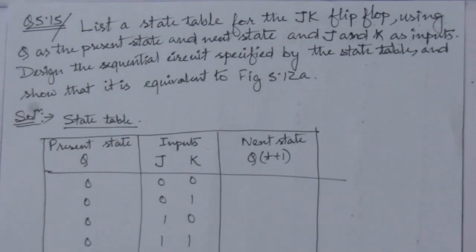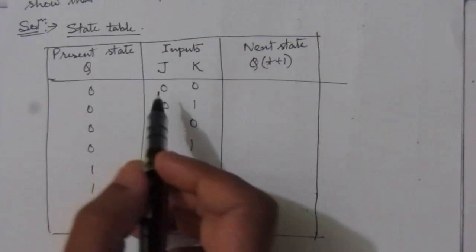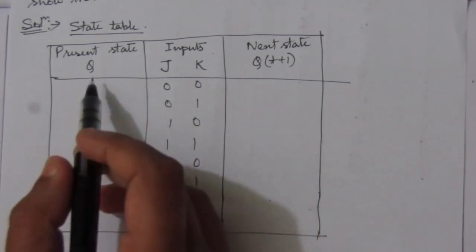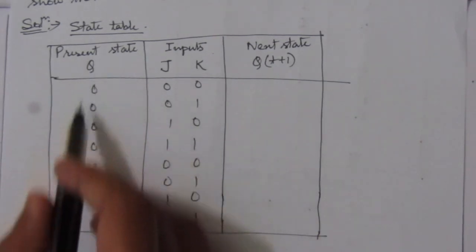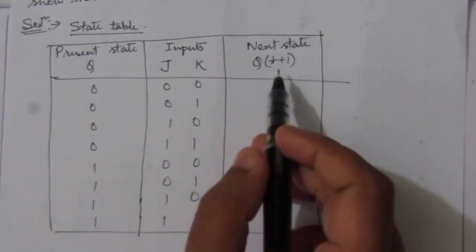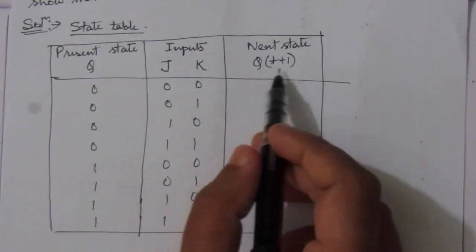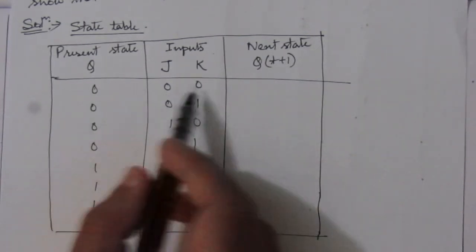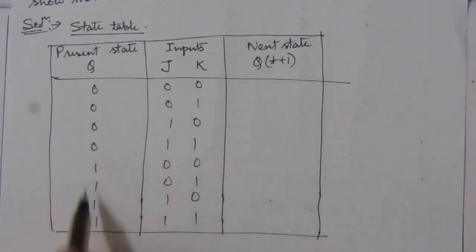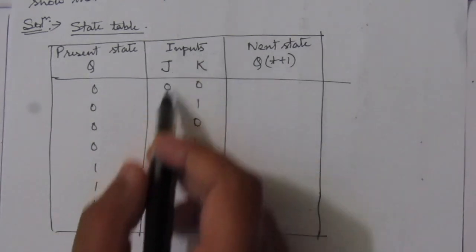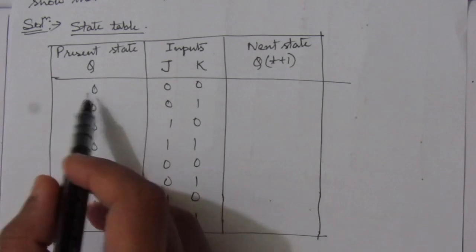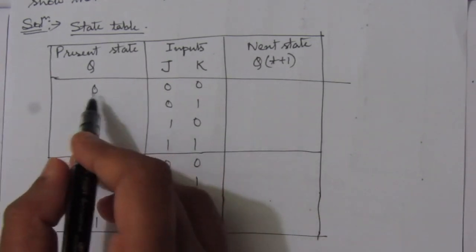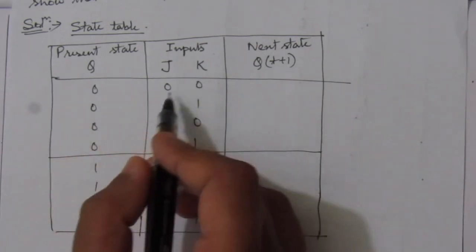First of all we have to find out the state table. We have feedback from the outputs — these are the present state outputs — and then we have to find out the next state output Q(t+1). We'll have three types of input variables: feedback from the output side and two inputs, so we can have eight combinations.